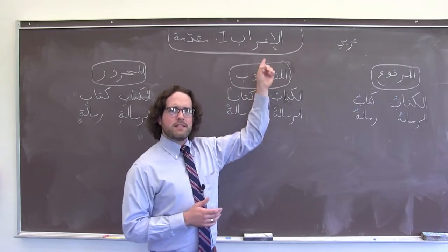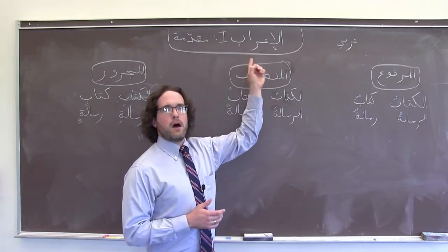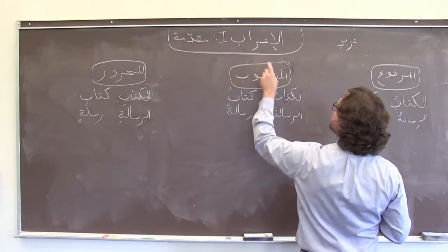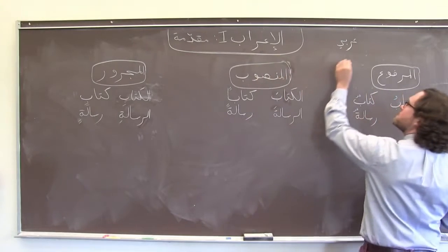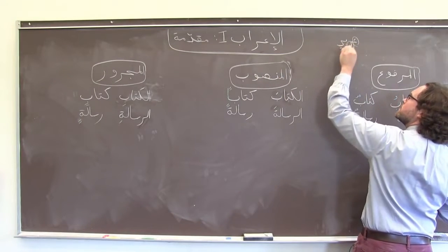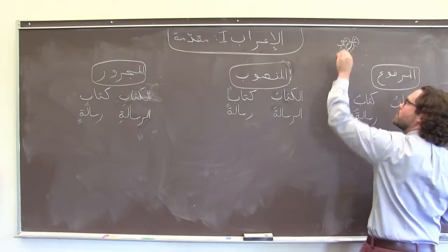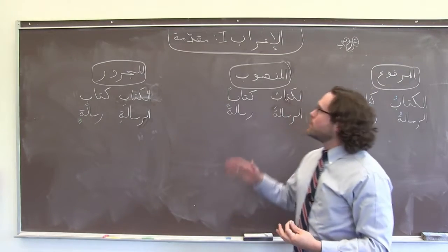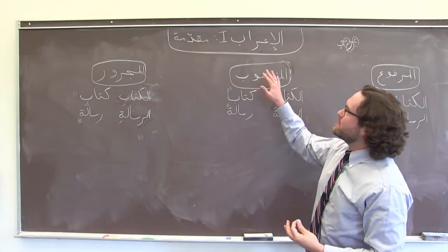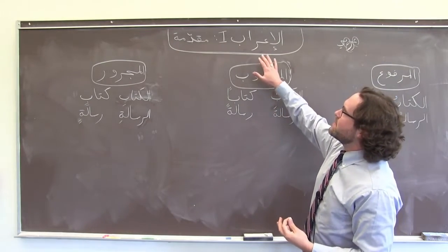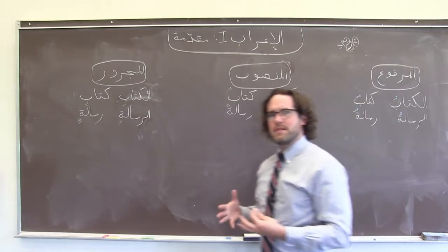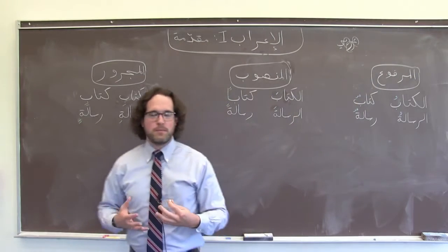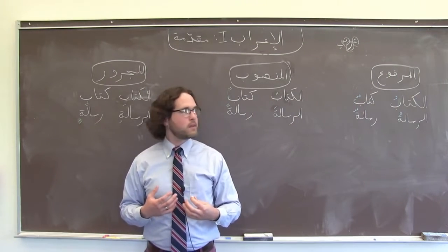You'll notice that إعراب, as a word, is a مصدر that comes from the same جذر as the word for Arabic in Arabic — عربي, العربية. It's really no exaggeration to say that الإعراب means making something into proper Arabic.